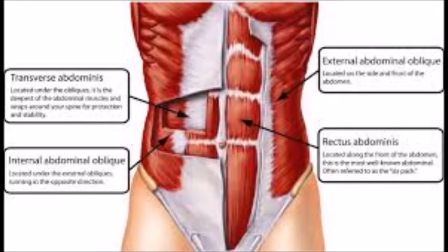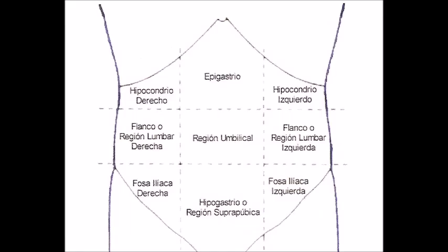Pain in this region is often associated with the appendix. In the lower left quadrant is most of the small intestine, part of the large intestine, the left half of the femoral and prostate system, and the left ureter. Pain in this region is often associated with the colon, pelvic inflammatory diseases, and the ovary.